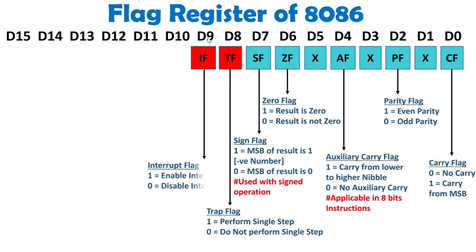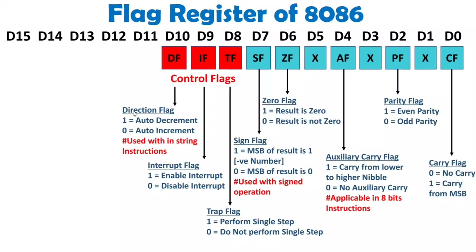D9 is the interrupt flag. If interrupt is enabled, this flag will be 1; if it is disabled, it will be 0. D10 is the direction flag. Auto-decrement and auto-increment can be identified with string operations. The SI and DI pointers in 8086 will be in auto-decrement or auto-increment mode based on this DF flag. If it is 1, it will decrement automatically by 1; if it is 0, it will be in increment mode.